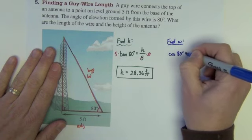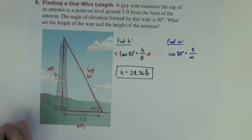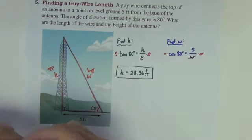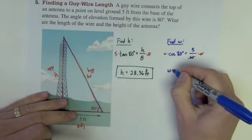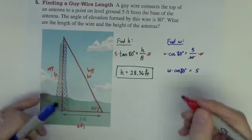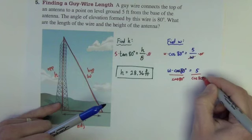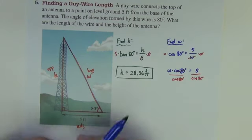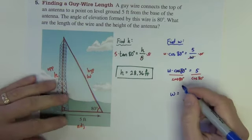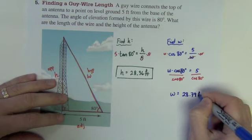So cosine of 80 degrees equals adjacent which is five divided by hypotenuse which is W. And now we'll solve this equation. It's a two step equation. Multiply the W out of the denominator first. So we get W times the cosine of 80 degrees equals five. We divide both sides by the cosine of 80 degrees. And now we're ready for calculator work. W is equal to 28.79 feet.